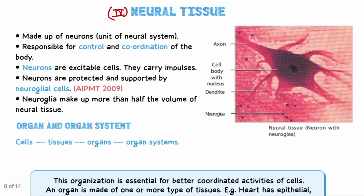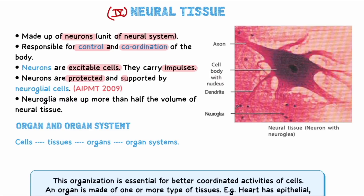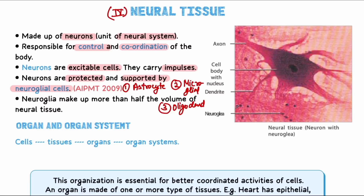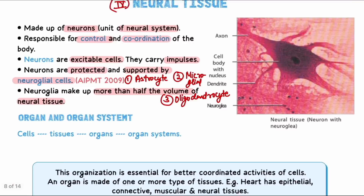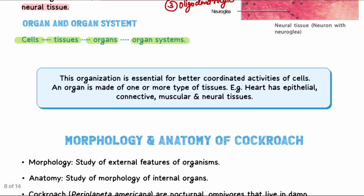The fourth tissue is neural tissue. Neural tissue is made of neurons — the unit of the neural system — which are responsible for control and coordination of the body. Neurons are excitable cells that carry impulses and action potentials. Outside the neurons, neuroglial cells provide protection and support. There are three types of neuroglial cells: astrocytes, microglial cells, and oligodendrocytes. Neuroglial cells make up more than half the volume of neural tissue.